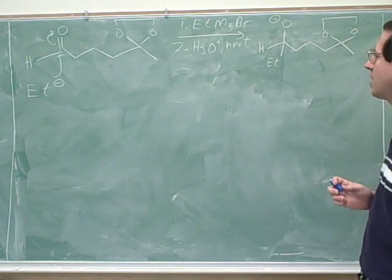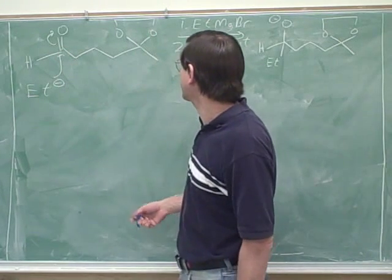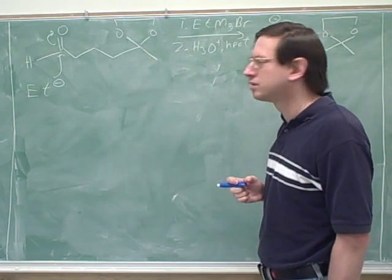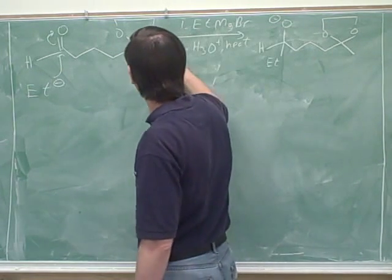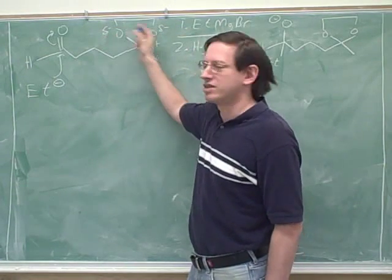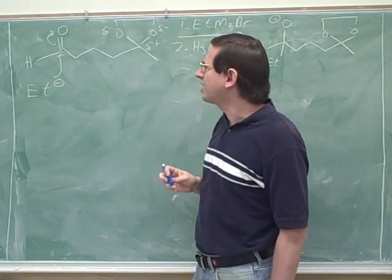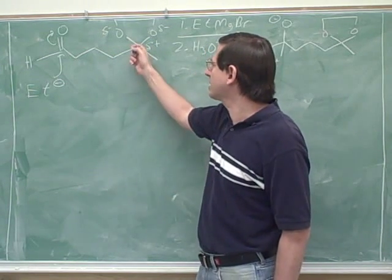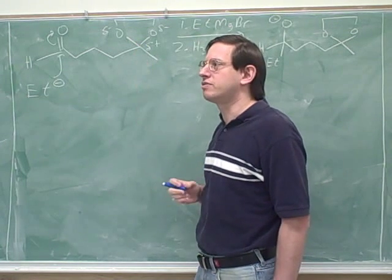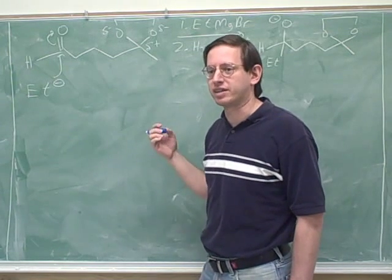Now, how do you know that the Grignard is going to attack the carbonyl and that it's not going to attack this ketal group here? But it doesn't have a delta plus. In fact, it does, doesn't it? Because these are electronegatives. This would have a delta plus. So how do we know it's not going to attack here? I think maybe we talked about this last time. So this is a ketal. Remember that ketals and acetals are unreactive with nucleophiles and bases?